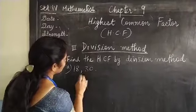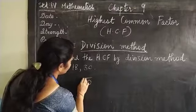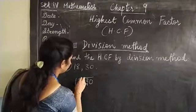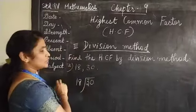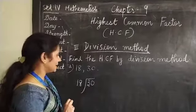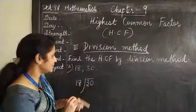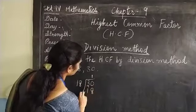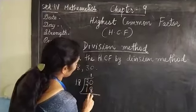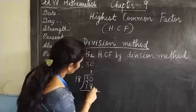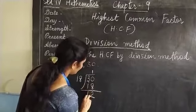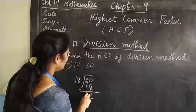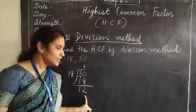30 is the greatest number. 30 divided by 18. 18 ones are 18. 18 twos are 36, but only 30, then 18 one is 18. 30 minus 18, 2, 2 minus 1, 1. Here we got the remainder 12.